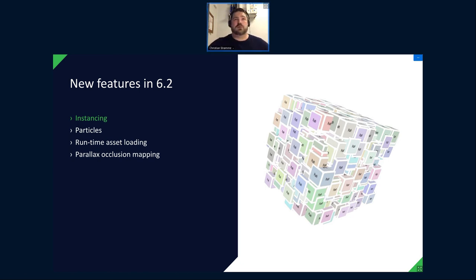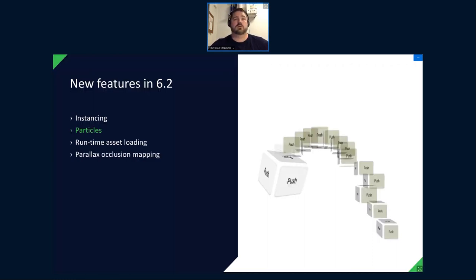Next is 3D particles — the 3D version of the particles system familiar from Qt Quick. This was also tech preview in 6.1 and has been lifted for 6.2. It uses instancing for the model mode. There are two modes for doing particles: the model version and the sprite version. Both instancing and particles have excellent blog posts worth reading.